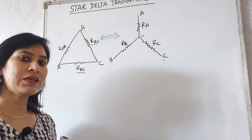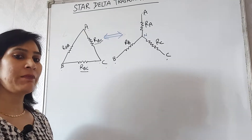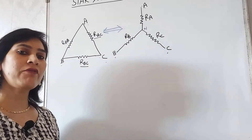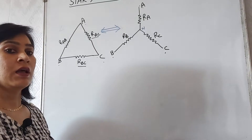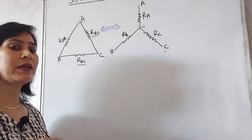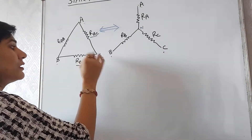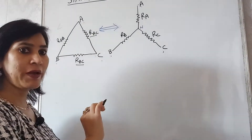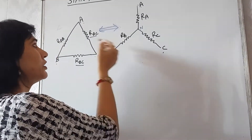Where are star and delta connections used? When we have series and parallel combinations, the circuit is simple and we solve it using series and parallel combination. But sometimes we have complicated circuits in which series and parallel combinations are not easily visible. In those cases, we solve the circuit with the help of star and delta conversion.